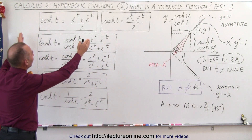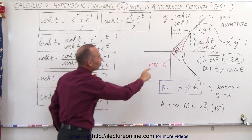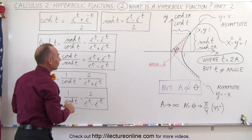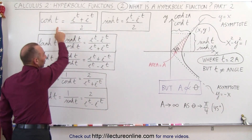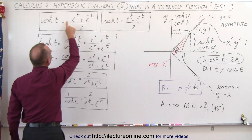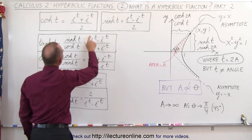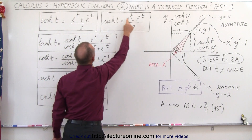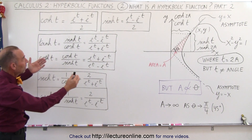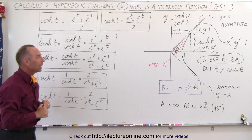Here we have the mathematical formulas that define the hyperbolic cosine and the hyperbolic sine. Again, t represents twice the area — we'll see in a later video how to calculate that area. The hyperbolic cosine is defined as e to the t plus e to the minus t, divided by 2. The only difference for the hyperbolic sine is that the plus becomes a minus. You'll see the relationship to the graph in a later video.